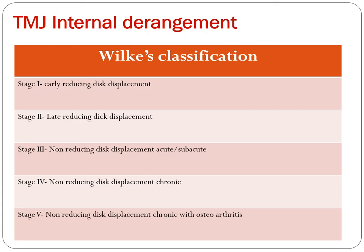The staging of internal derangement includes: Stage 1 — late reducing displacement; Stage 2 — early reducing displacement; Stage 3 — non-reducing displacement, acute; Stage 4 — non-reducing displacement, chronic; Stage 5 — chronic non-reducing displacement with osteoarthritis.